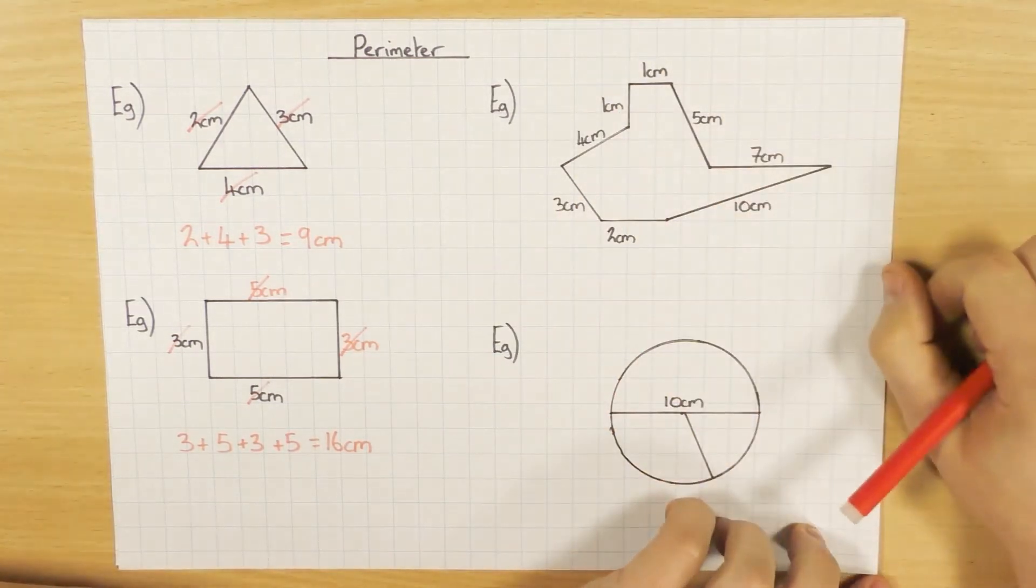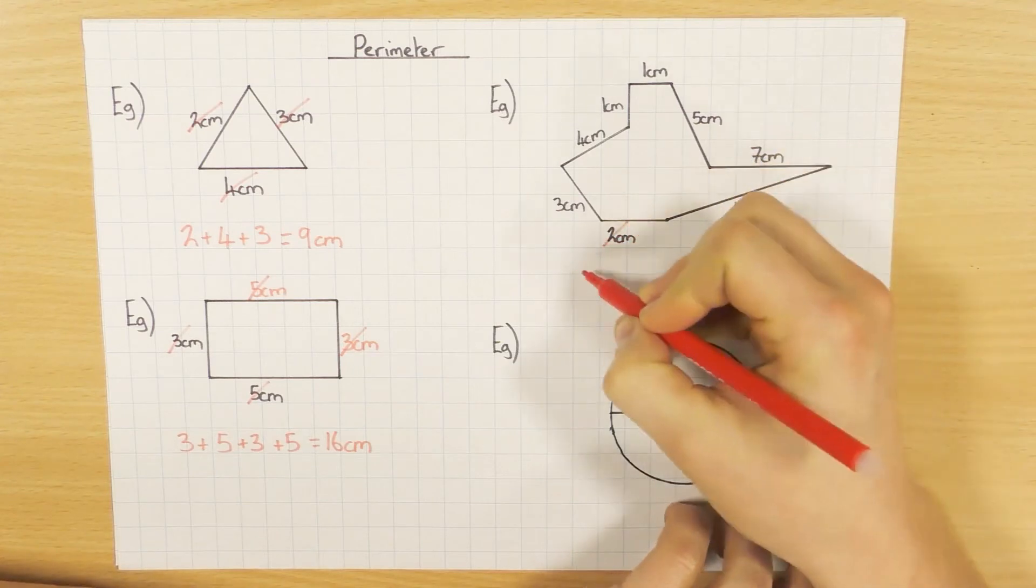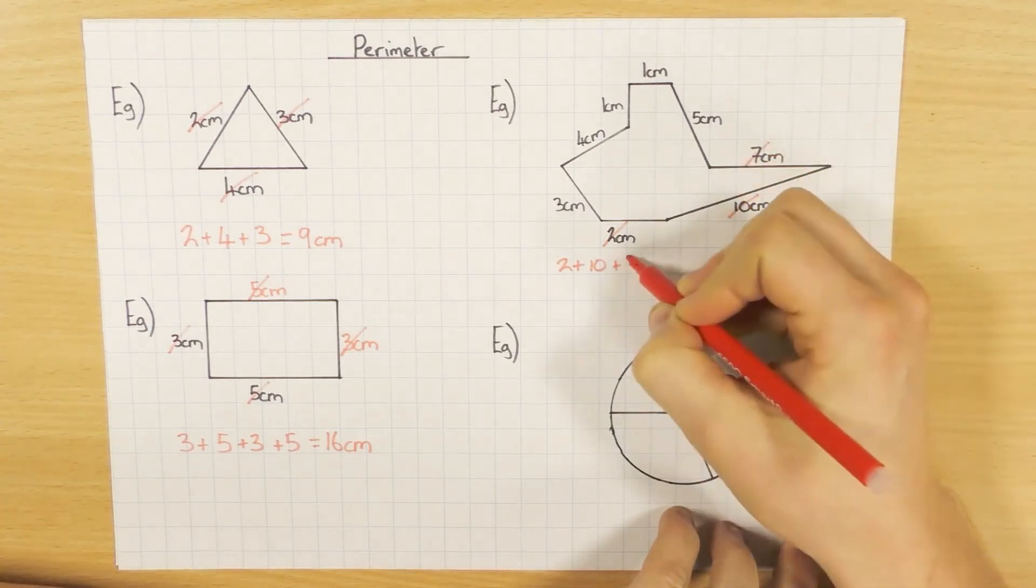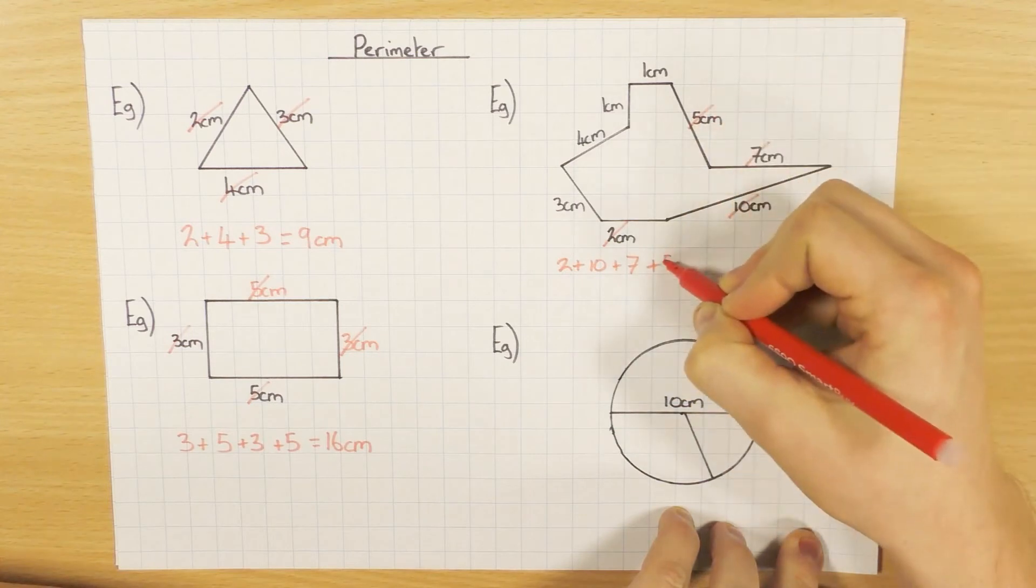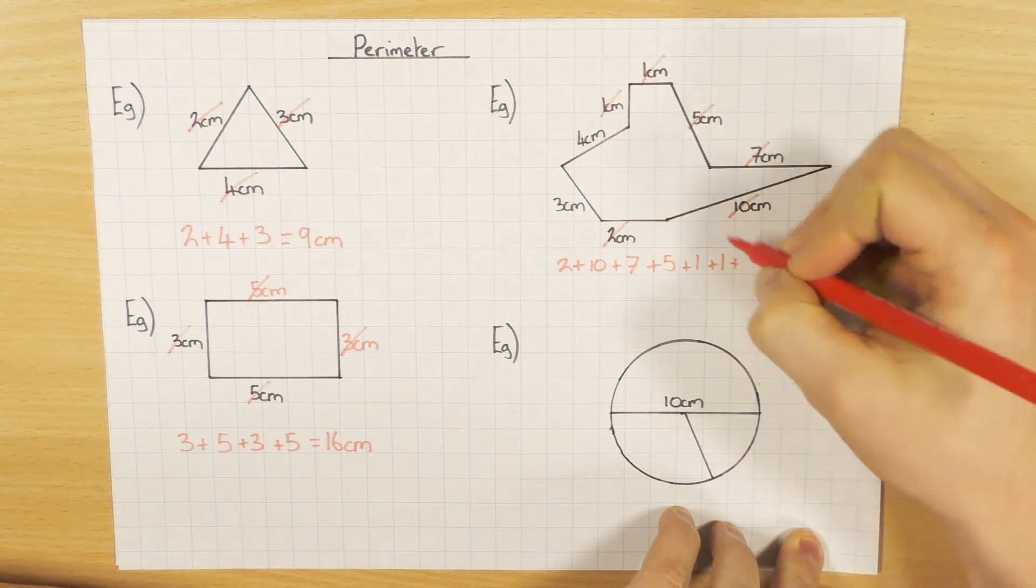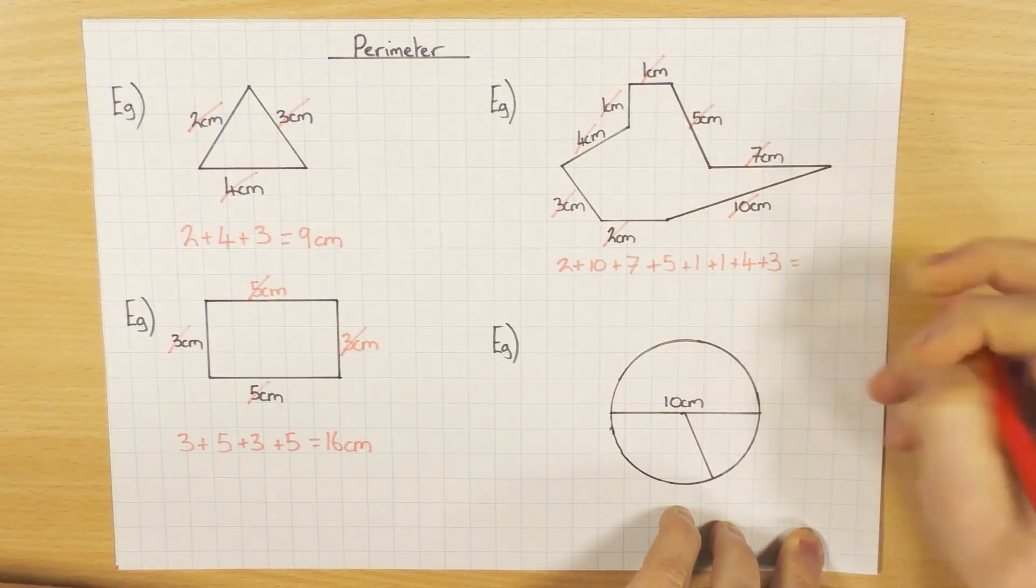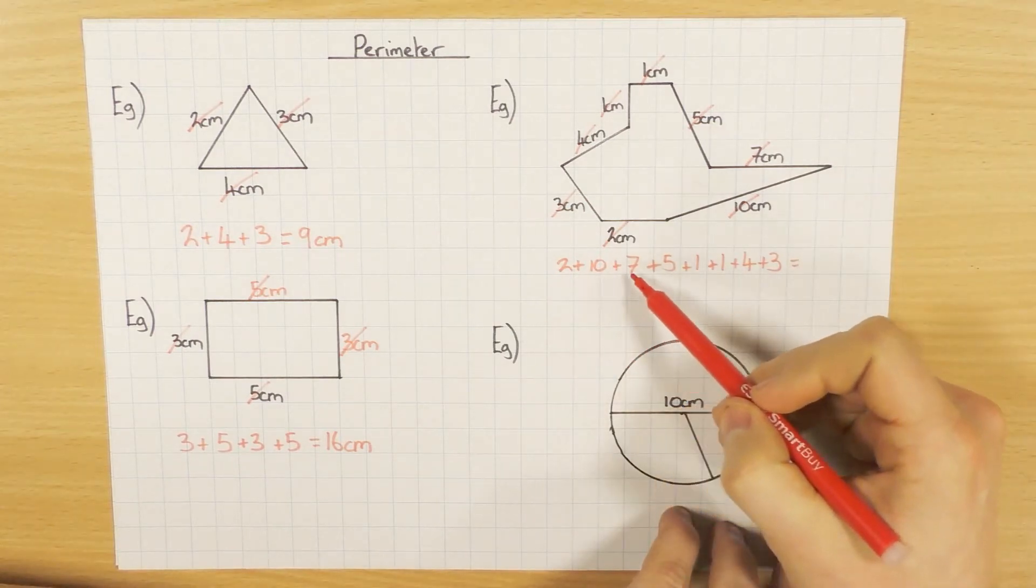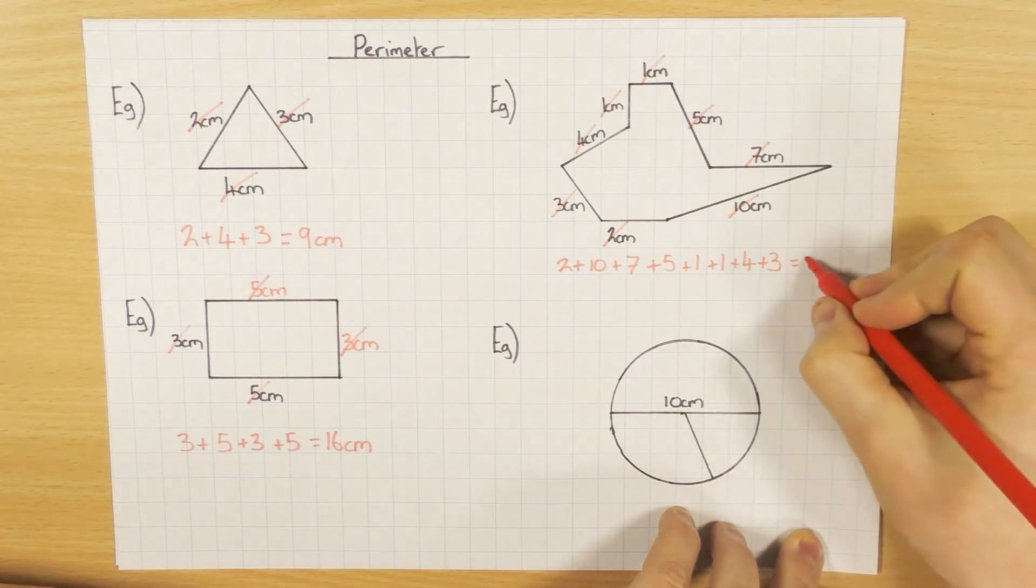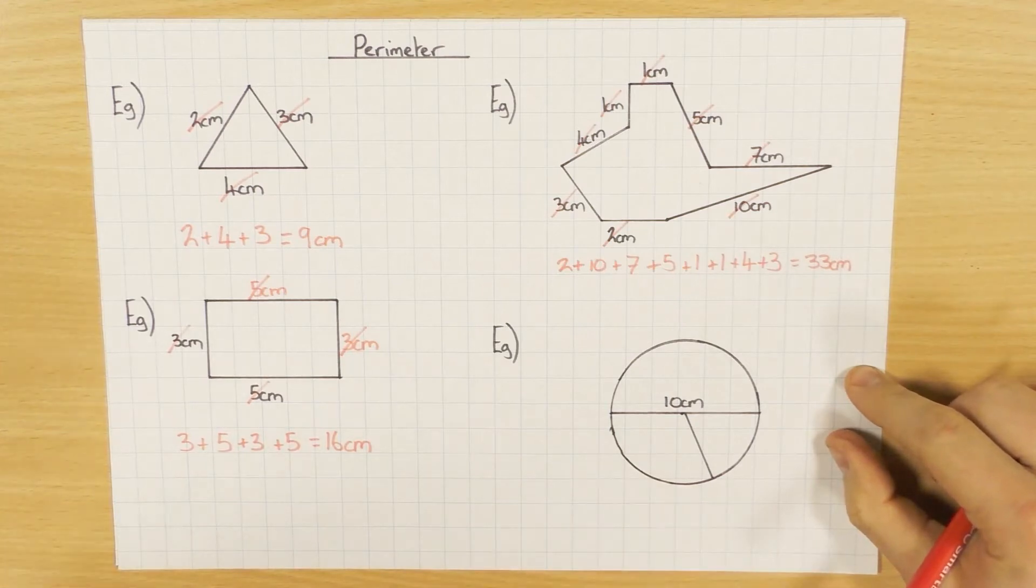This is an extreme case to show that no matter what the shape, you just go around the outside adding all the lengths. Notice how I'm crossing these off as I go so I don't miss any. Also, show your work in case you make a calculation error. If this was a 2-mark question, you can get the mark from showing your working even if you make a calculation error. So 2 add 10 is 12, add 7 is 19, add 5 is 24, 25, 26, 30, then 33 centimeters for the perimeter.